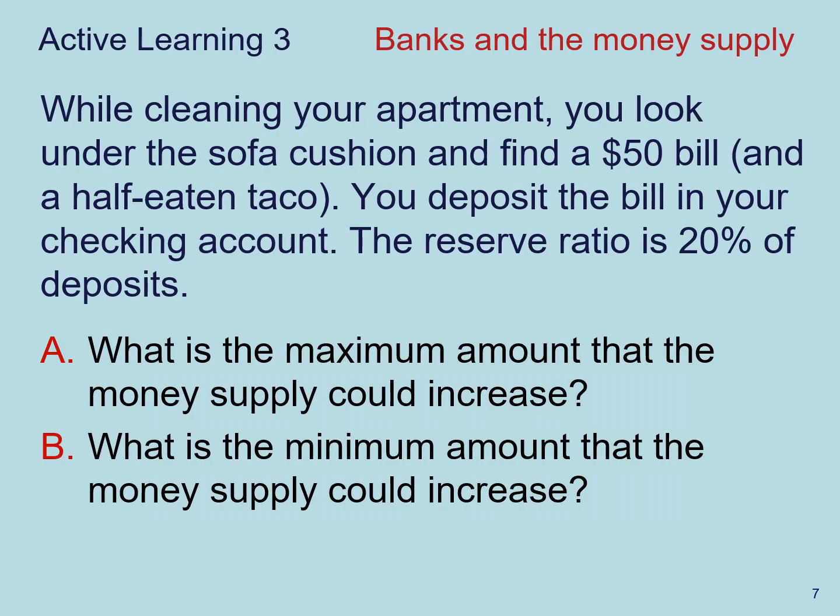To understand this money creation process, let's think about this active learning exercise. While cleaning your apartment, you look under the sofa cushion and find a $50 bill and a half-eaten taco. You deposit the bill in your checking account. We know that currently the reserve ratio is 20%. I want you to think about: A) what is the maximum amount of money that could be created as a result of your deposit, and B) what is the minimum amount that the money supply could increase by your deposit. Please submit your answers on Top Hat before moving on.